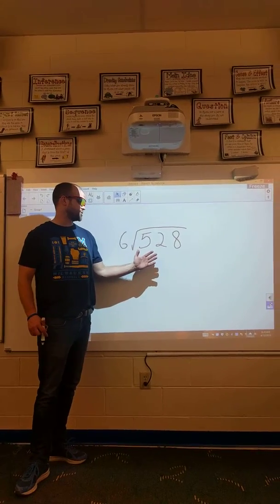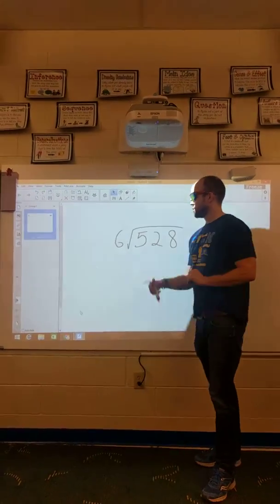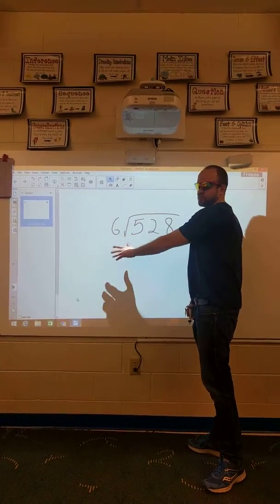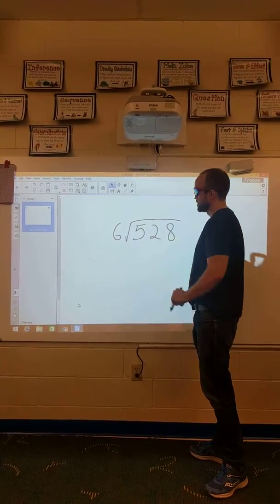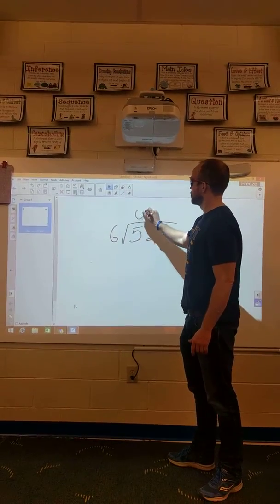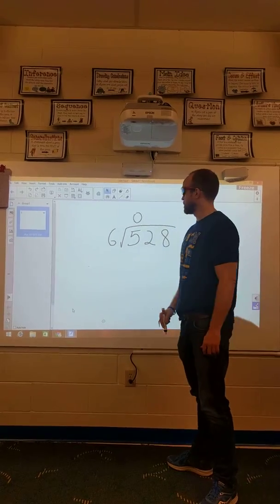So the first thing I need to do is look at the actual highest place value, which would be the hundred place value. This is generally the only time in math where you start with the largest place value and move to the smaller place value. How many times does 6 go into 5? Zero times. 6 cannot go into 5 at all because 5 is smaller.